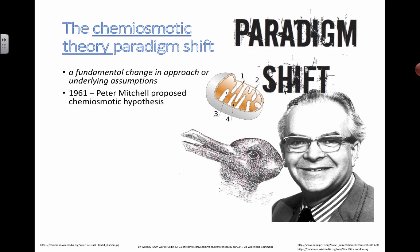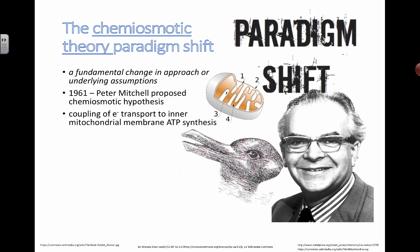In 1961, Peter Mitchell proposed the idea of chemiosmosis, and nobody was really into it. He was saying what we all know now — that electron transport is coupled to ATP synthesis. The movement of electrons helps move protons across the membrane, building up a concentration gradient, which then drives protons back through ATP synthase to produce ATP. This idea was radically different from what came before.